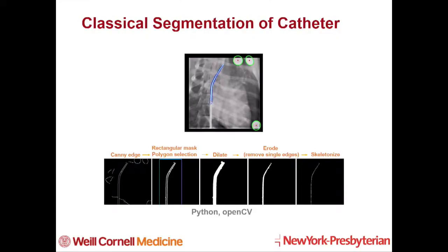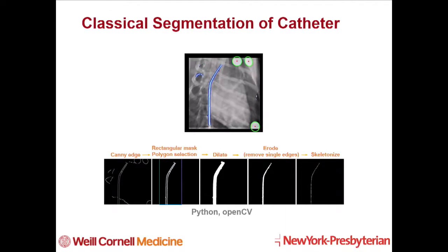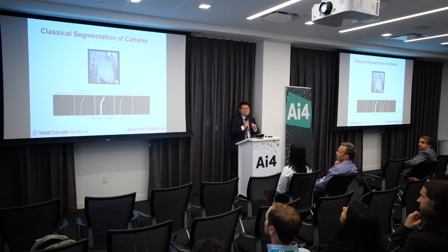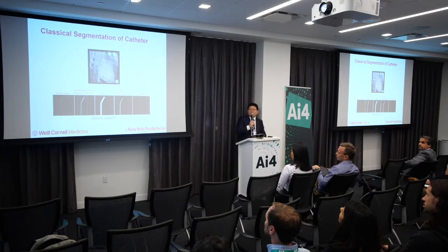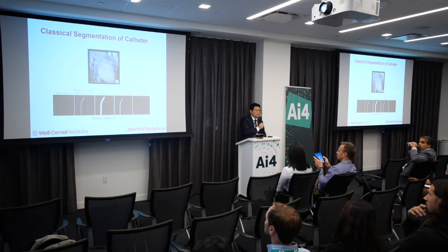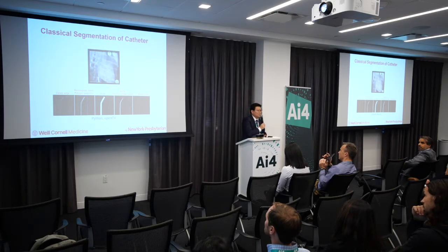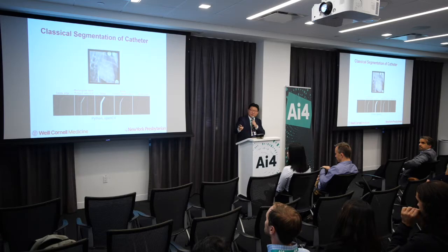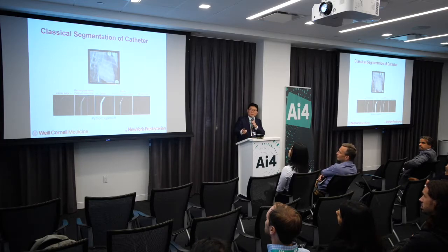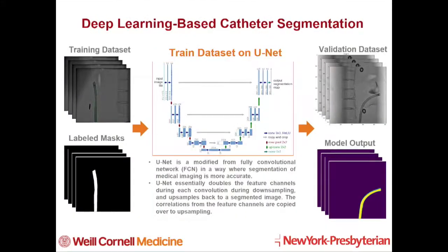For catheter segmentation, the classical protocol involves edge detection, applying restrictions, dilation, erosion, and skeletonization using OpenCV algorithms. However, segmentation is not always perfect — single thresholding is not adaptive, and even adaptive thresholding sometimes follows rib shadows or misses parts of the catheter. So we applied a deep learning algorithm to solve this problem.